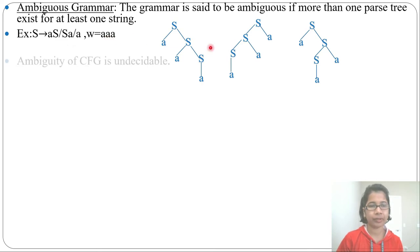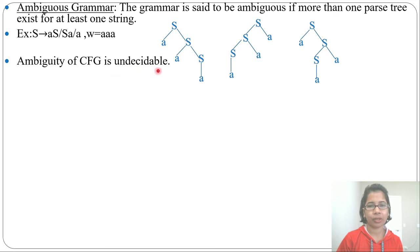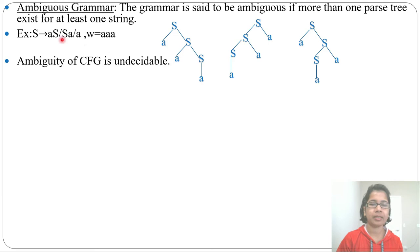That's why this grammar is ambiguous. You can check arbitrarily any string and check the ambiguity. The ambiguity of context-free grammar is undecidable — there is no algorithm to check it. You can just randomly try any string and design the parse tree; if more than one parse tree exists, then that grammar is ambiguous.